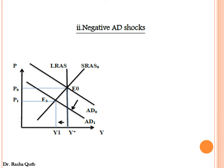Second, with negative aggregate demand shocks, we have to remember what are the main causes of these shocks. Aggregate demand could shift leftward when we have a reduction in investment, government expenditures, or an increase in taxes. The starting point is E-zero, the point of intersection between the aggregate demand curve and the SRAS curve.